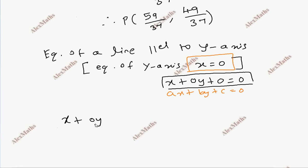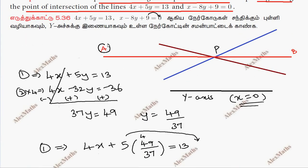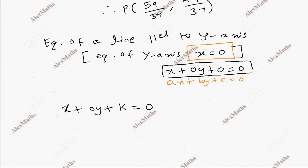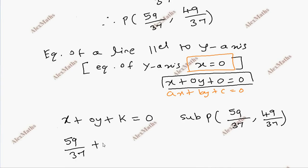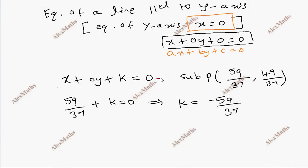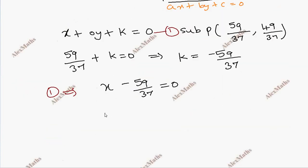Passing through point P, we substitute P which is (59 by 37, 49 by 37). So 59 by 37 plus k equals 0, giving k equal to minus 59 by 37. Therefore the equation is 37x minus 59 equal to 0.